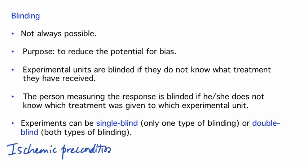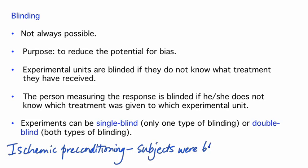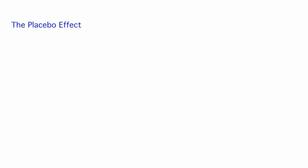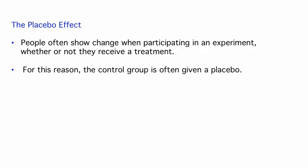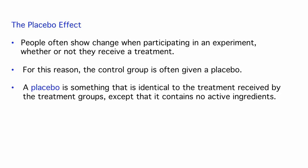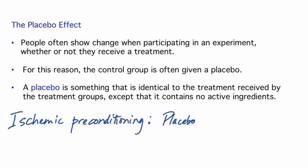The ischemic preconditioning experiment was single blinded — subjects did not know which treatment they received. They also used a placebo. People often show change when participating in an experiment whether or not they receive a treatment; this is known as the placebo effect. For this reason, the control group is often given a placebo, which is something identical to the treatment received by the treatment groups except that it contains no active ingredients, so subjects aren't aware of whether or not they're receiving a treatment. In this experiment, the placebo was the application of 0 pounds pressure.